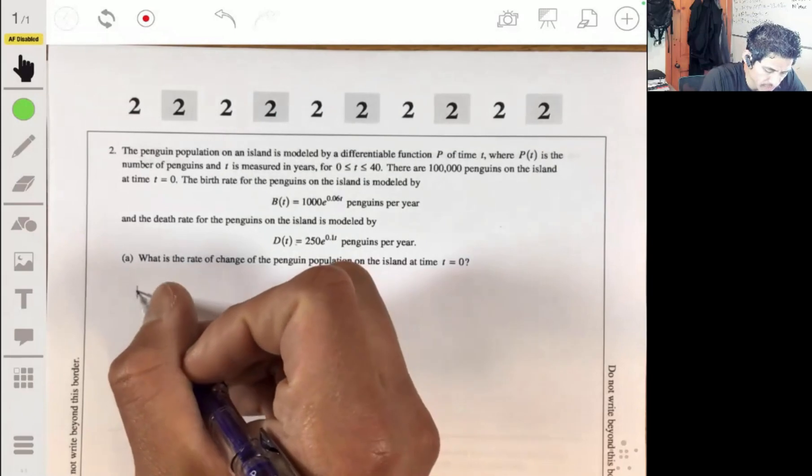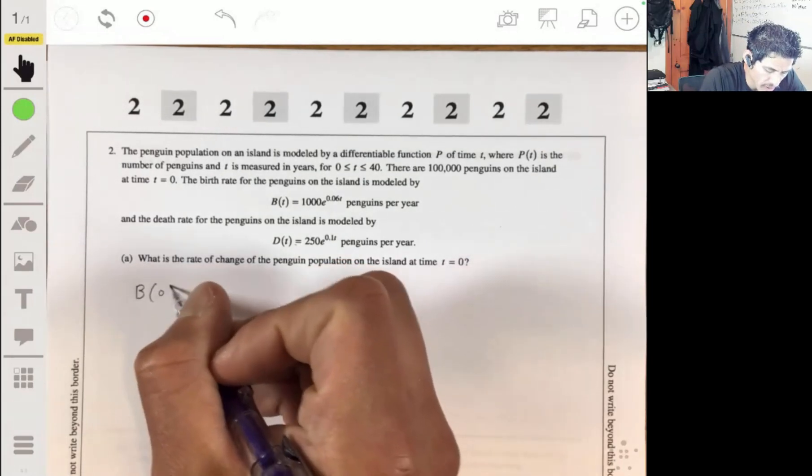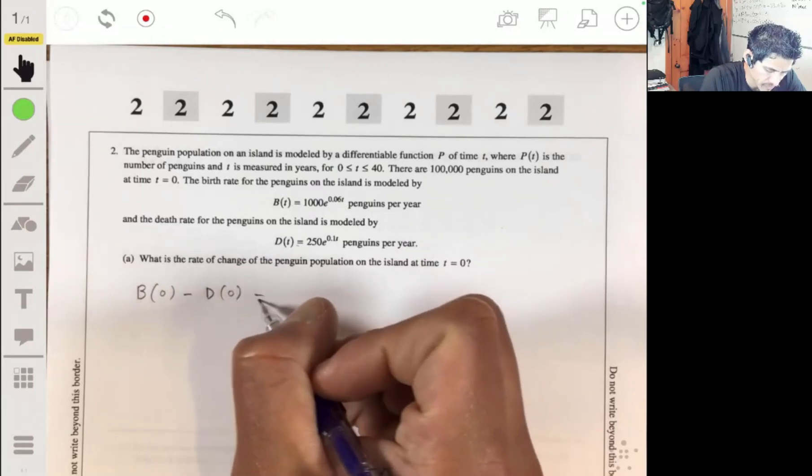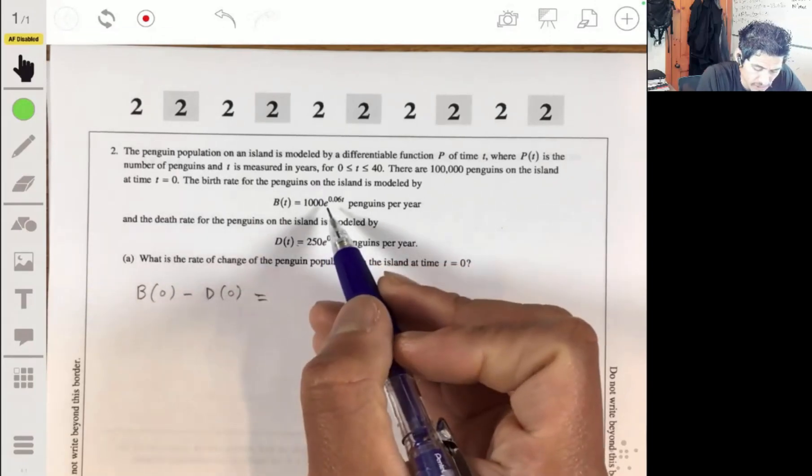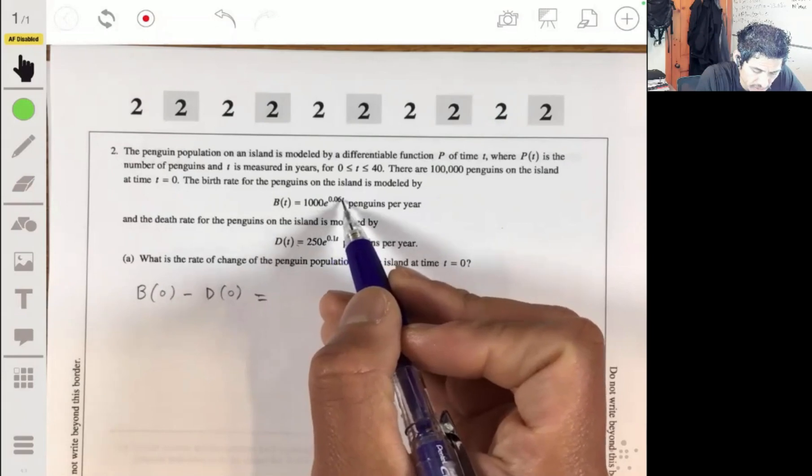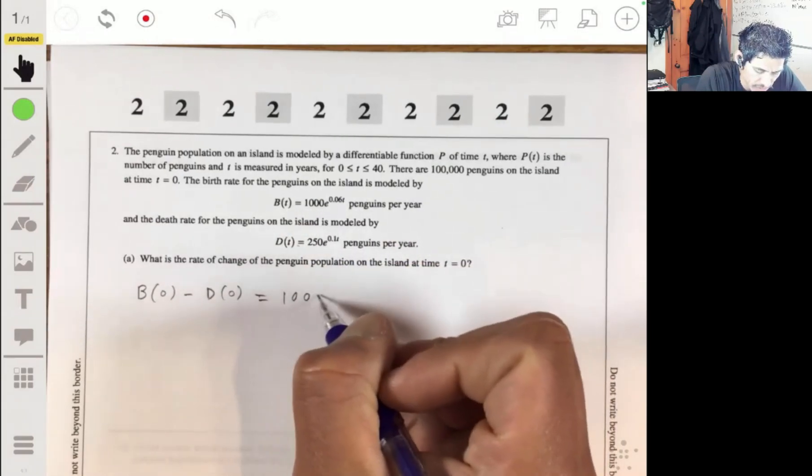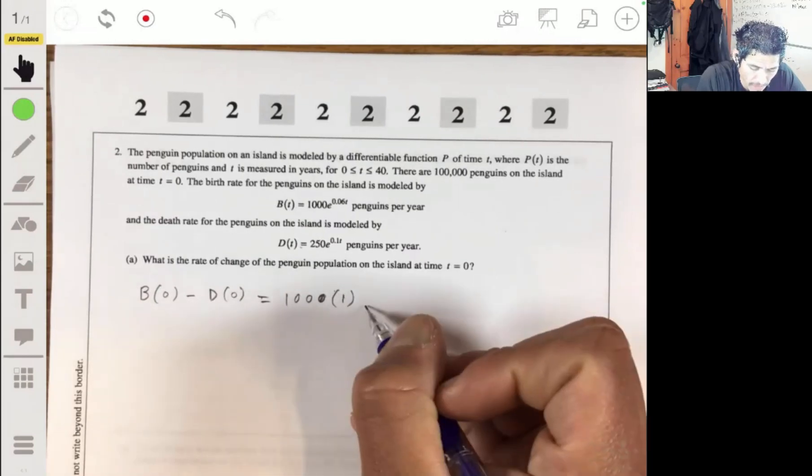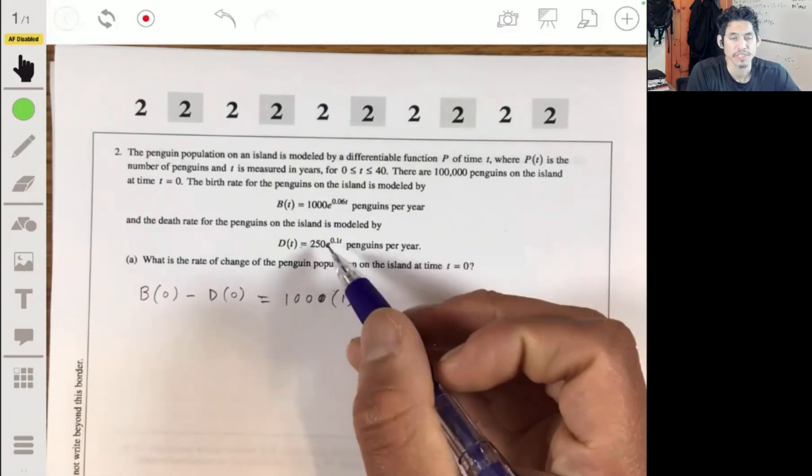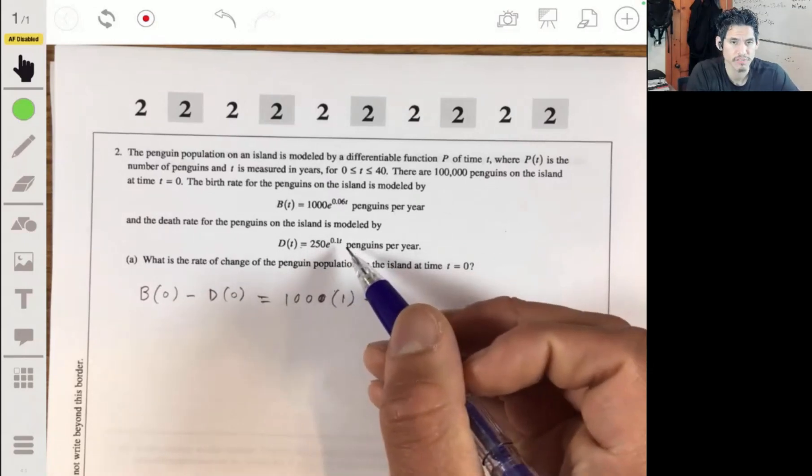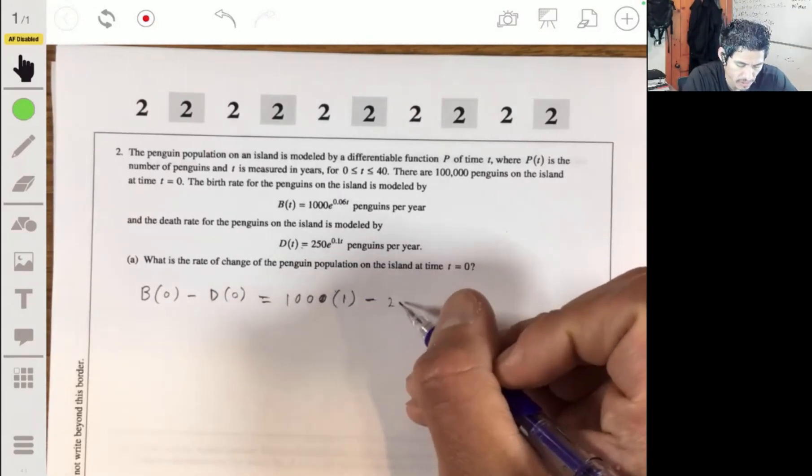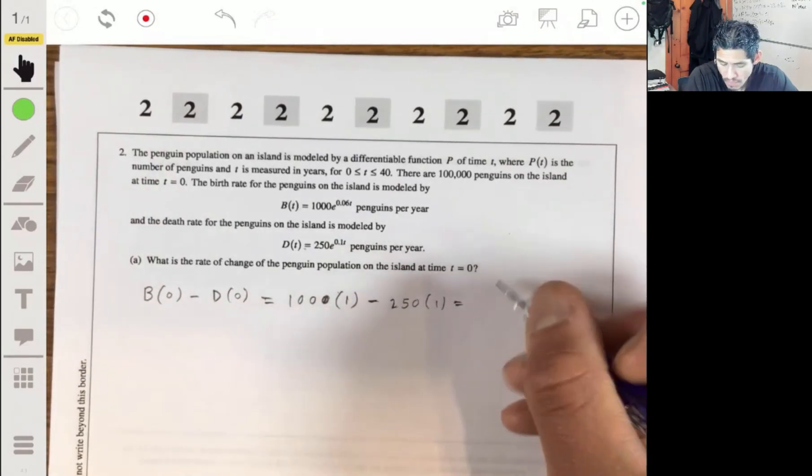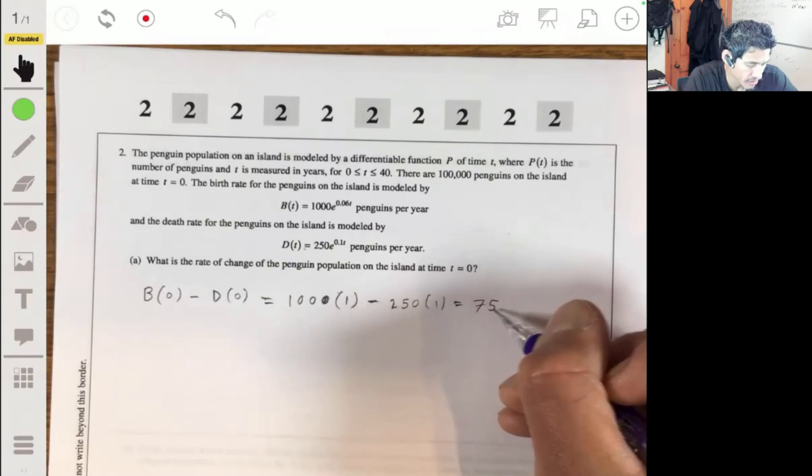So we're going to do B(0) minus D(0). The birth rate at the start was 1000 times e to the 0 power, which is just going to be 1000 because e to the 0 power is 1. D(0) is going to be 250 times e to the 0, so it'll just be 250 times 1, which is 250.